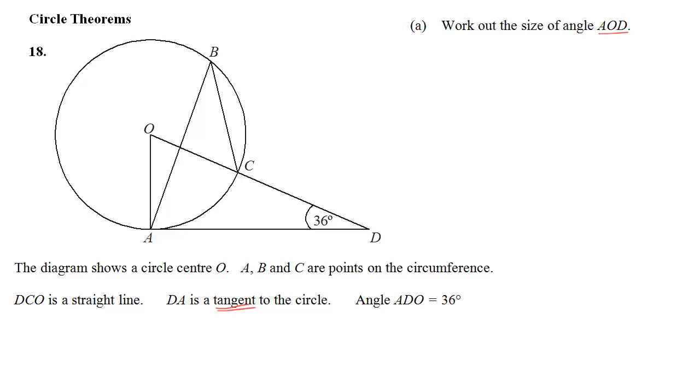And angle ADO is 36, that's labelled. So we want angle AOD, labelled here on the diagram, and the key fact that we're going to use is that DA is a tangent to the circle, because we've got a triangle involving the angle that we want, and now I can label this angle here as being 90 degrees, the reason being that a tangent meets a radius at 90 degrees.